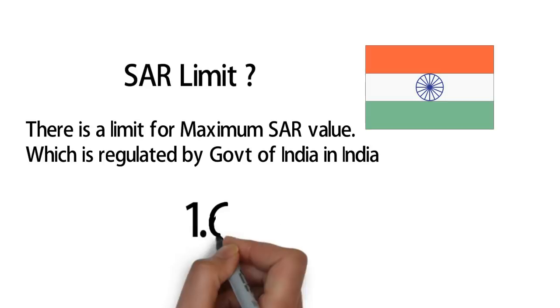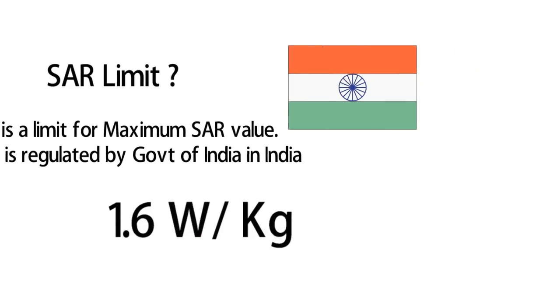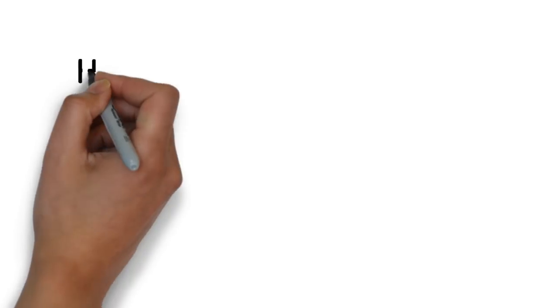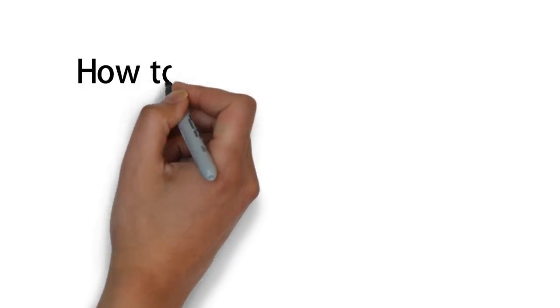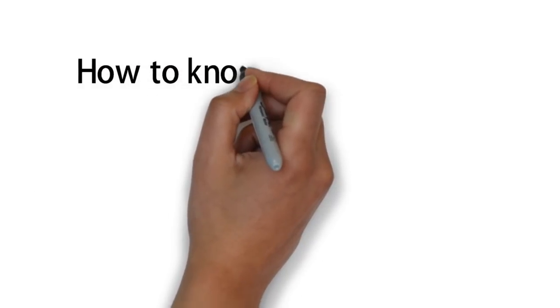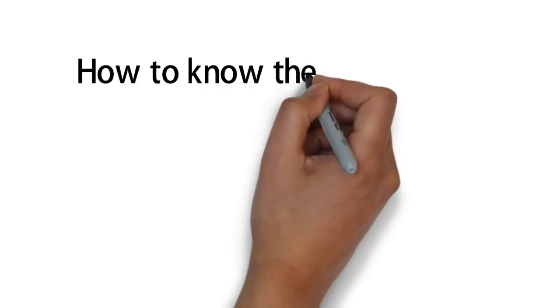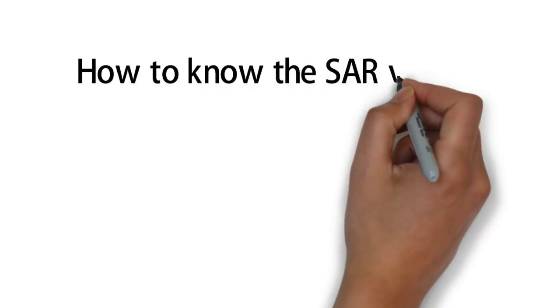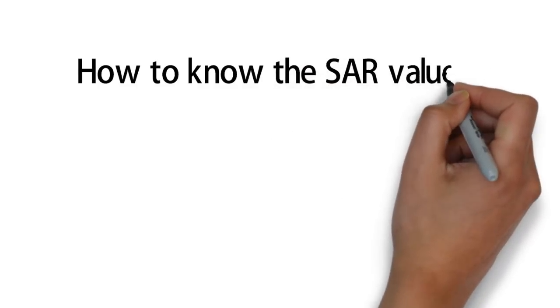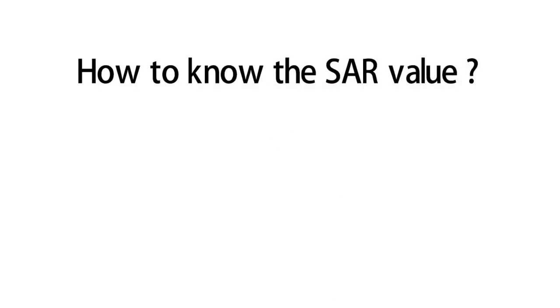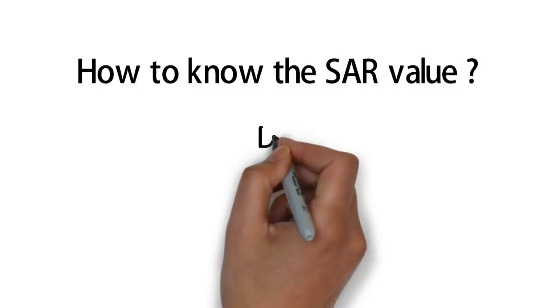This is a specific safety check for the body. You can dial star-hash and pound-zero-seven-hash on your phone to check the SAR value in our phone.